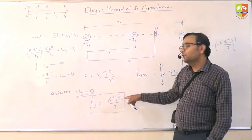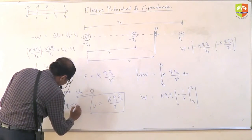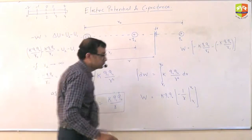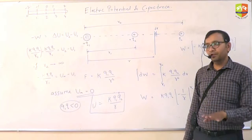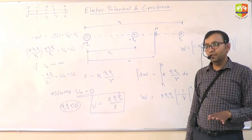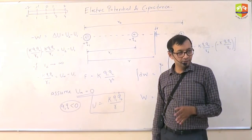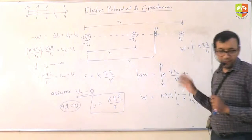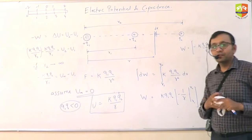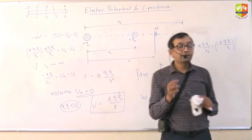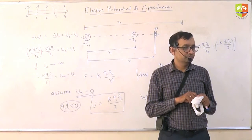If q1 times q2 is less than zero — that is, if q1 and q2 are of opposite signs — the potential energy will be negative. Potential energy can be negative. We have now defined the potential energy between two point charges.